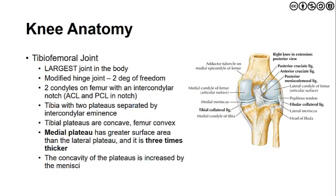As we begin our discussion of the knee anatomy, we'll start with the tibiofemoral joint. It is the largest joint in the body. We consider this to be a modified hinge joint with two degrees of freedom. We have two condyles on the femur, both medial and lateral, and an intercondylar notch that exists which allows for the proximal attachment of the anterior cruciate ligament and the posterior cruciate ligament found within the notch. Additionally, we also find the posterior meniscofemoral ligament within this location as well.